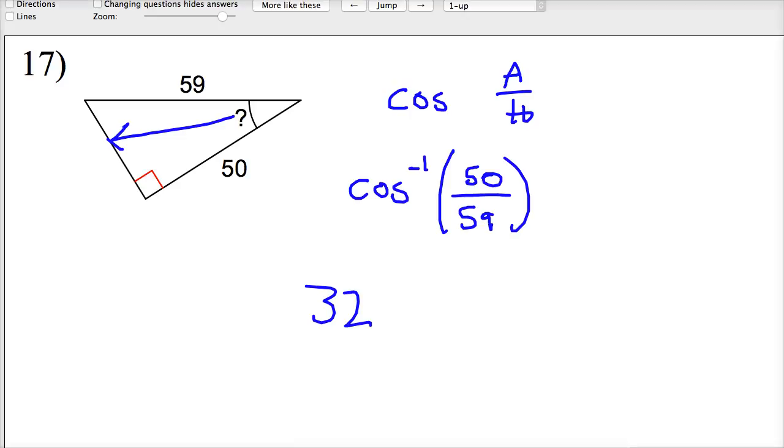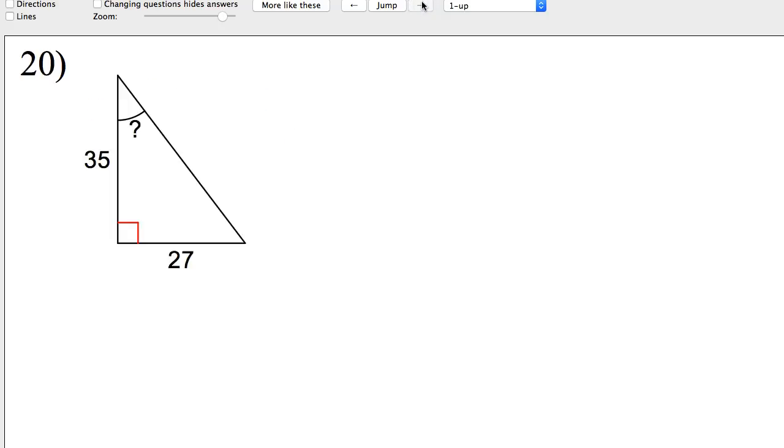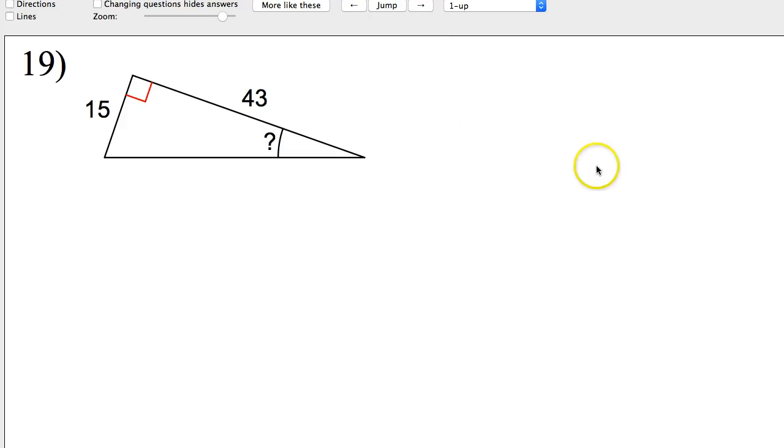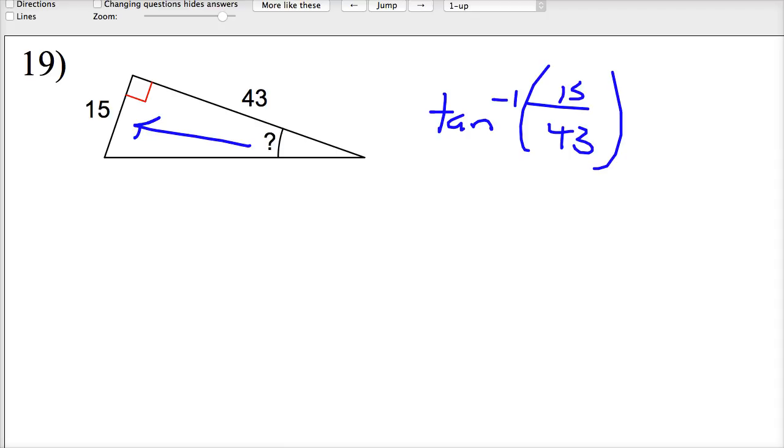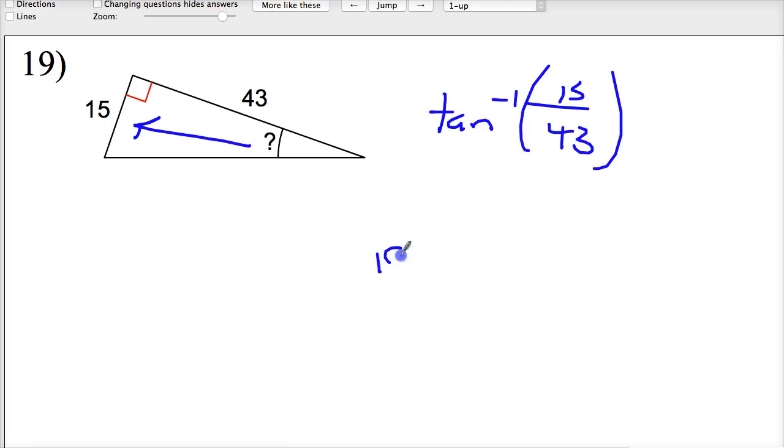One more and we're all done. I have my angle here. Opposite side over adjacent, so this is tangent. Inverse tangent. Opposite would be 15. The adjacent side would be 43. So you can make a prediction now that this angle's probably not going to be very big, because 15 is significantly smaller than 43. It's almost one-third of the size. Find my tangent. Go in and make my fraction. 19.2. Seems like a reasonable answer. 19 degrees.